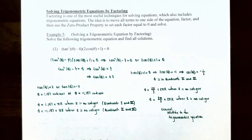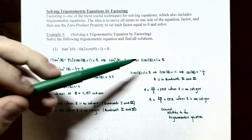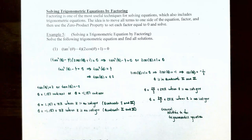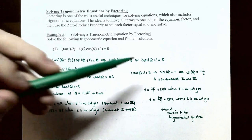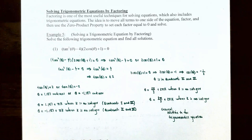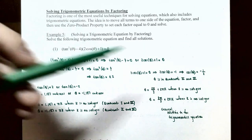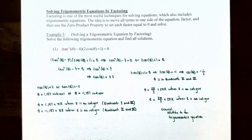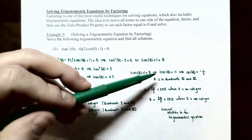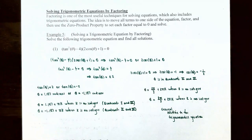On the other hand, we also have the factor 2cosθ + 1 = 0. Solving this equation by getting cosθ by itself: subtract 1 from both sides to get 2cosθ = −1, then divide both sides by 2, so cosθ = −1/2.